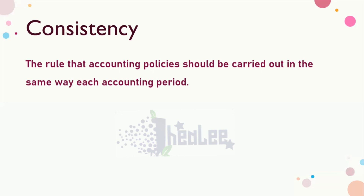We're not saying you are unable to change the method, but there are protocols in doing so. Another example of applying the consistency concept is where you use the last-in-first-out method, the first-in-first-out method, or the average cost method to value inventory. Whatever method was used in the previous year to treat a particular item is the same method expected to be used throughout the other years of the life of that item within the business.